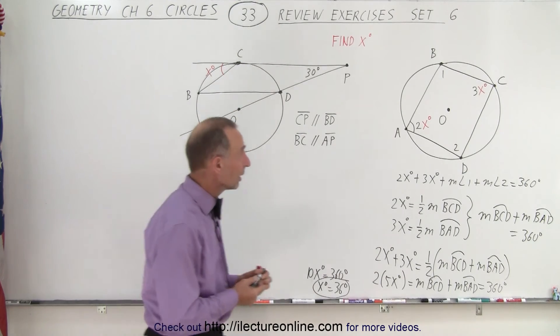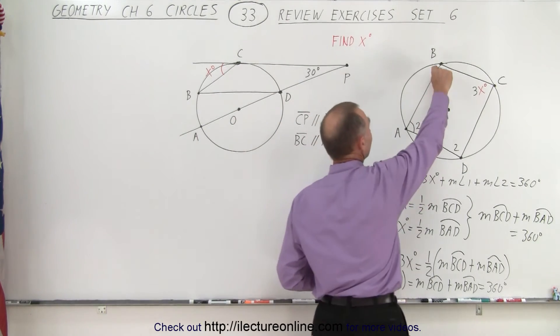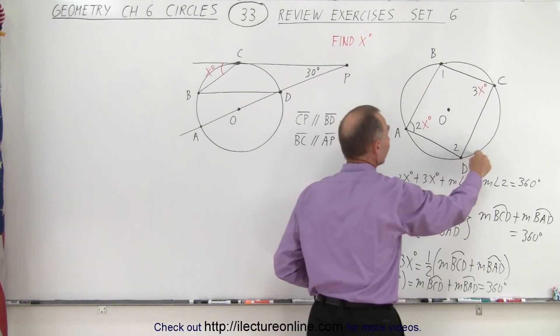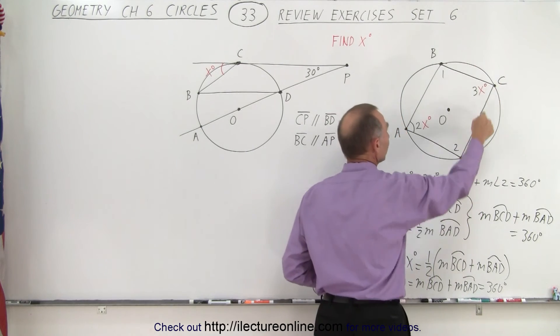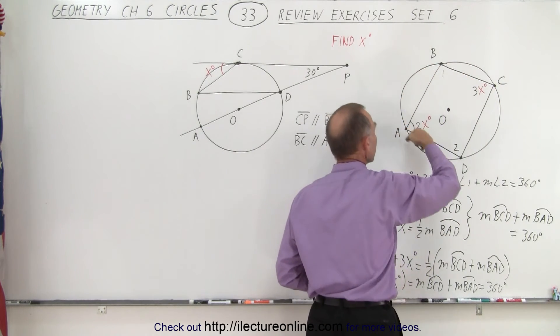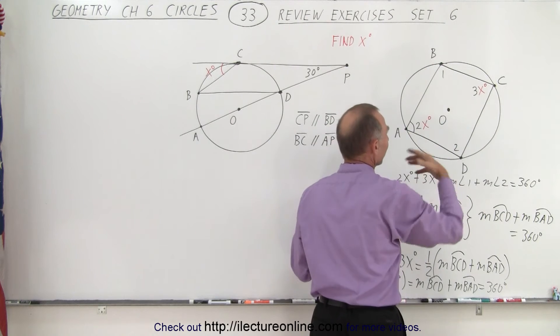So really what it came down to is using this angle to determine the arc length of this portion of the circle and to use this angle to come up with the arc length of this one, or at least have a relationship.